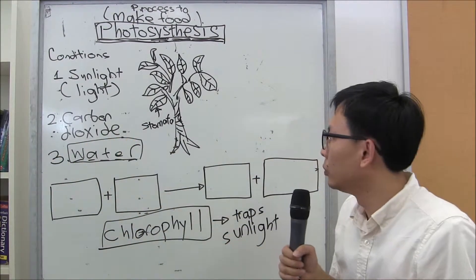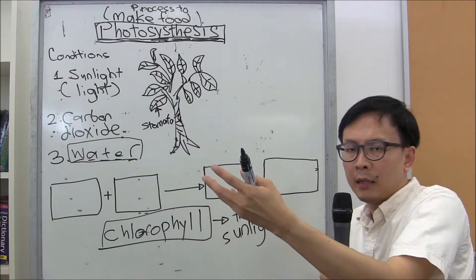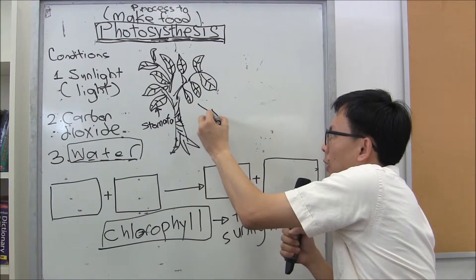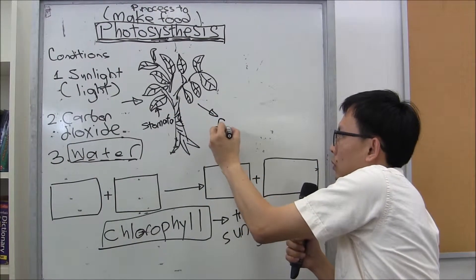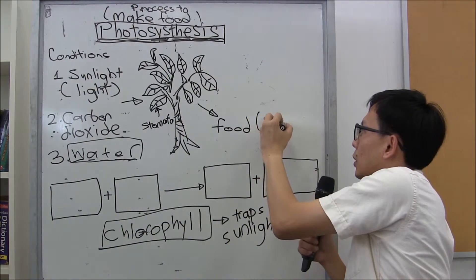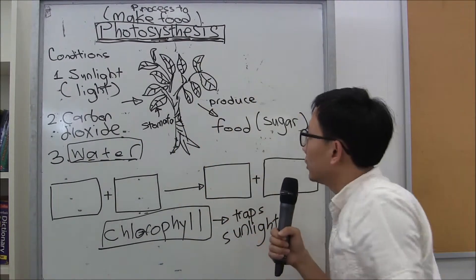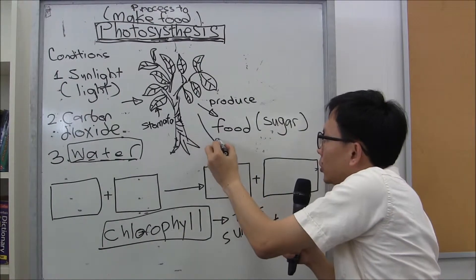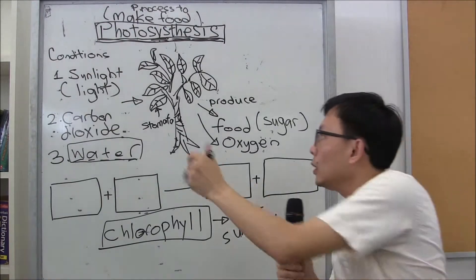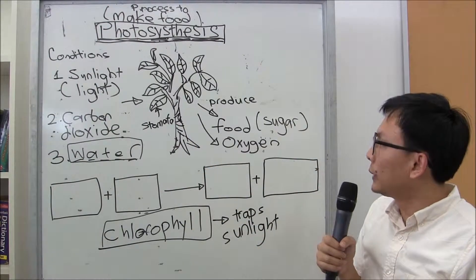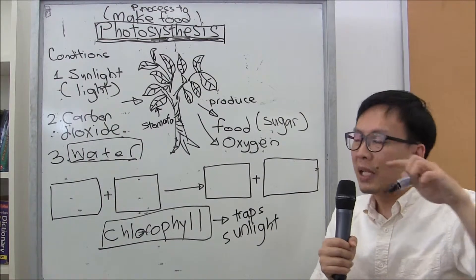So what happens during photosynthesis is that after the plants obtain sunlight, carbon dioxide, and water — these are all going in — what is produced is, of course, food, which is also known as sugar. And also very interestingly, oxygen is released back into the surrounding through the stomata. So in photosynthesis, plants absorb carbon dioxide through the stomata and release oxygen.